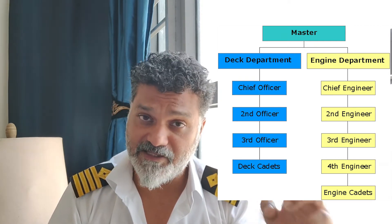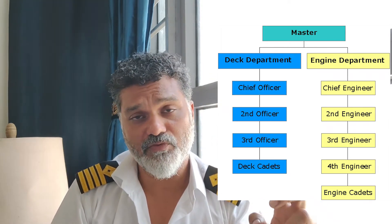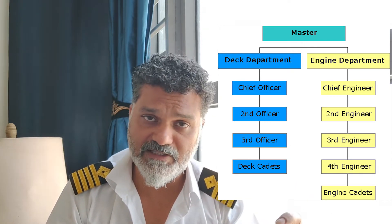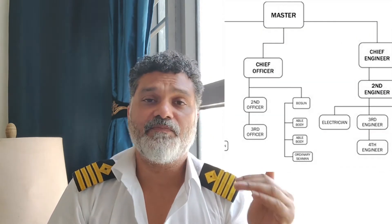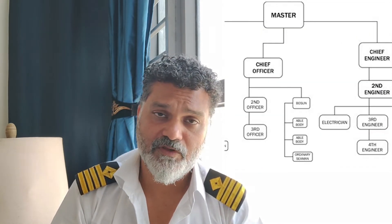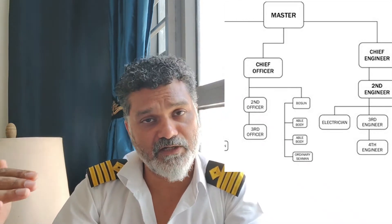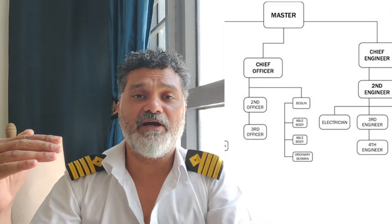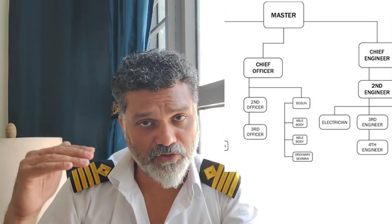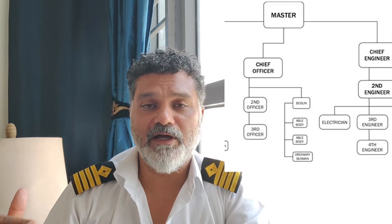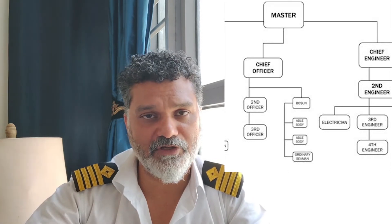On the deck department, under the chief officer, we have the second officer, the AB who is the able bodied seaman, the OS who is the ordinary seaman, followed by the cooks and the general stewards. On the engine room side, we have the chief engineer heading the department, the second engineer, the third engineer, the fourth engineer, and the electrical officer on many ships because of all the electrical complications. We also have the oiler and the wiper — these are the ratings who assist all the officers in the engine room.